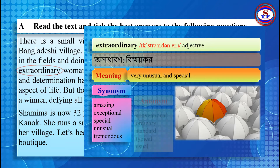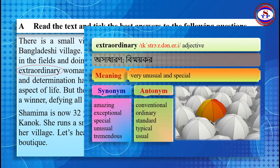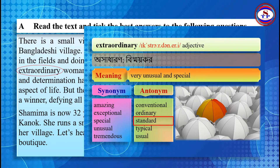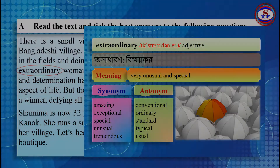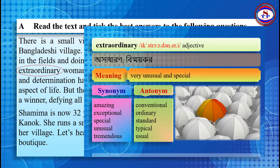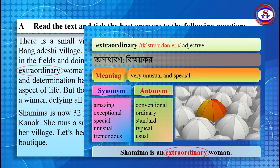The antonyms of extraordinary are: conventional, ordinary, standard, typical, and usual. Look at the example: Samima is an extraordinary woman. Samima's willpower and determination have made her extraordinary.